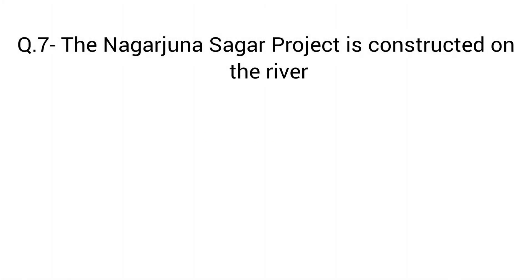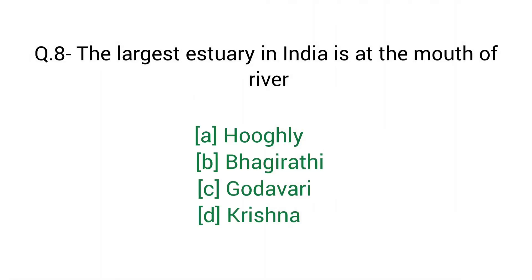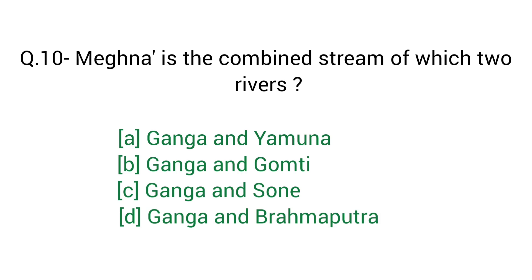Question number 7: The Nagarjuna Sagar project is constructed on the river — right answer option B: Krishna. Question number 8: The largest estuary in India is at the mouth of river — right answer option A: Hooghly river. Question number 9: The joint river valley venture of India and Nepal — right answer option D: Kosi. Question number 10: Meghna is the combined stream of which two rivers — right answer option D: Ganga and Brahmaputra rivers.